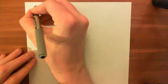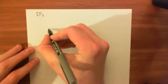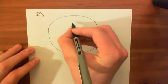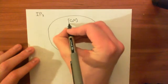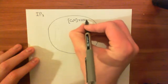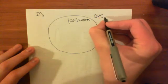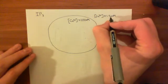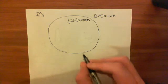IP3 is going to cause a calcium signal. The calcium level in the cytoplasm of a cell is very, very low — usually around 100 nanomolar. Compare that to the concentration of calcium in the extracellular fluid, which is usually around 1.5 millimolar — more than 10,000 times bigger. So it's a big concentration gradient across the cell membrane.